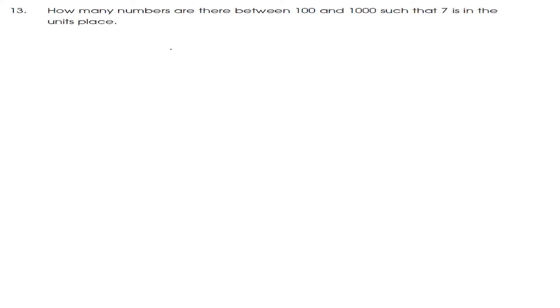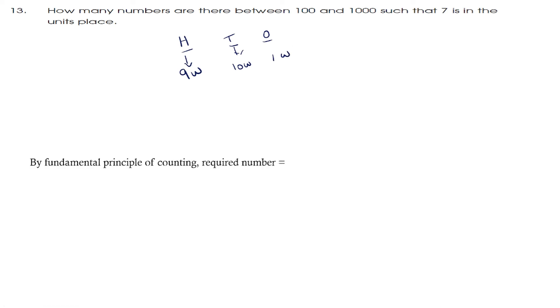Next question: how many numbers are there between 100 and 1000 such that 7 is in the units place? Numbers between 100 and 1000 have 3 digits — the 100's place, 10's place and 1's place. The 100's place can be filled in 9 ways, the 10's place in 10 ways, and since 7 must be in the units place, the 1's place has only 1 way. By the Fundamental Principle of Multiplication, the required number is 9 into 10 into 1, which is 90.